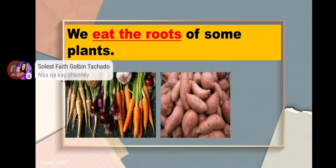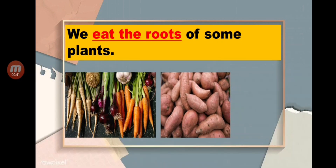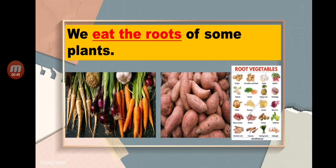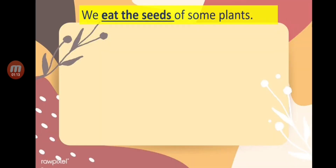Sweet potatoes are another example of root crops. Also ginger, garlic, and onions — all of these are plants that we can eat their roots.